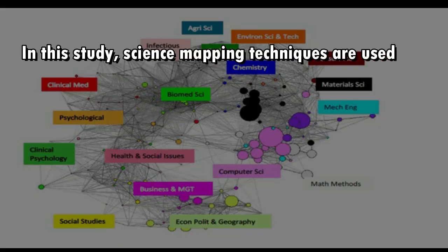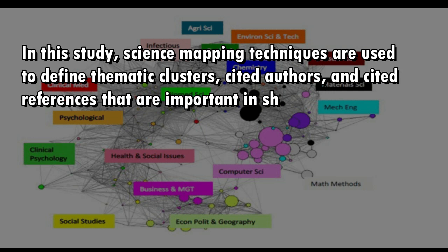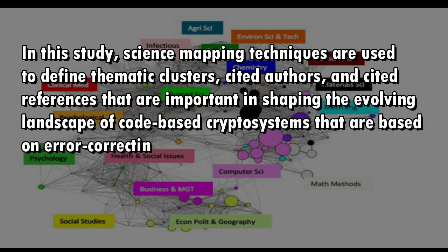In this study, science mapping techniques are used to define thematic clusters, cited authors, and cited references that are important in shaping the evolving landscape of code-based cryptosystems based on error-correcting codes.